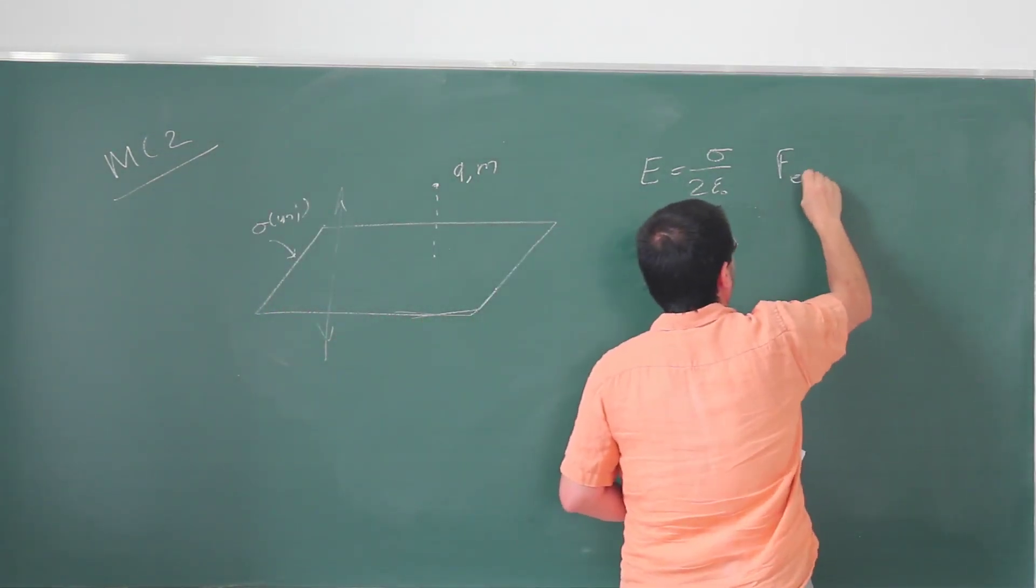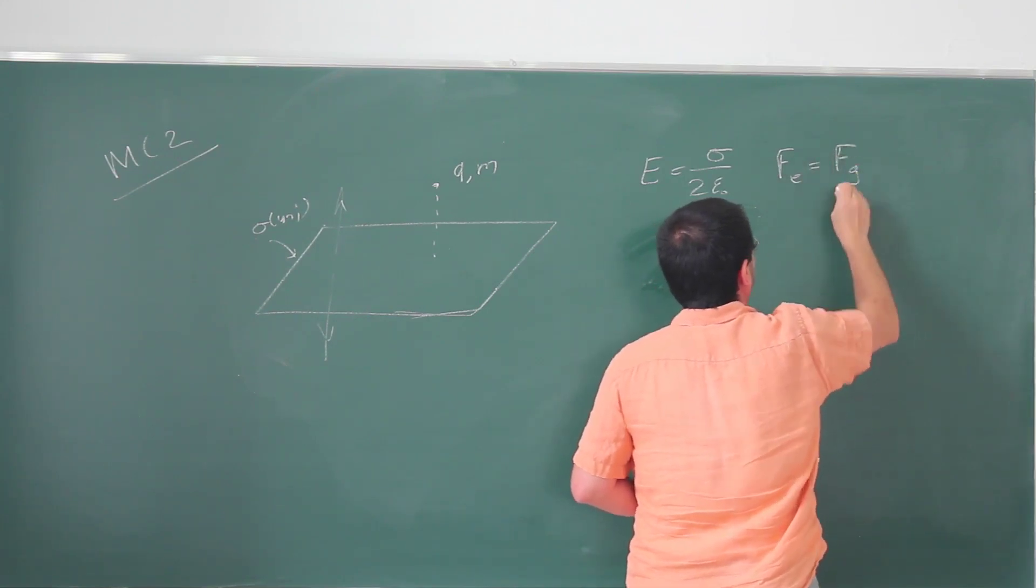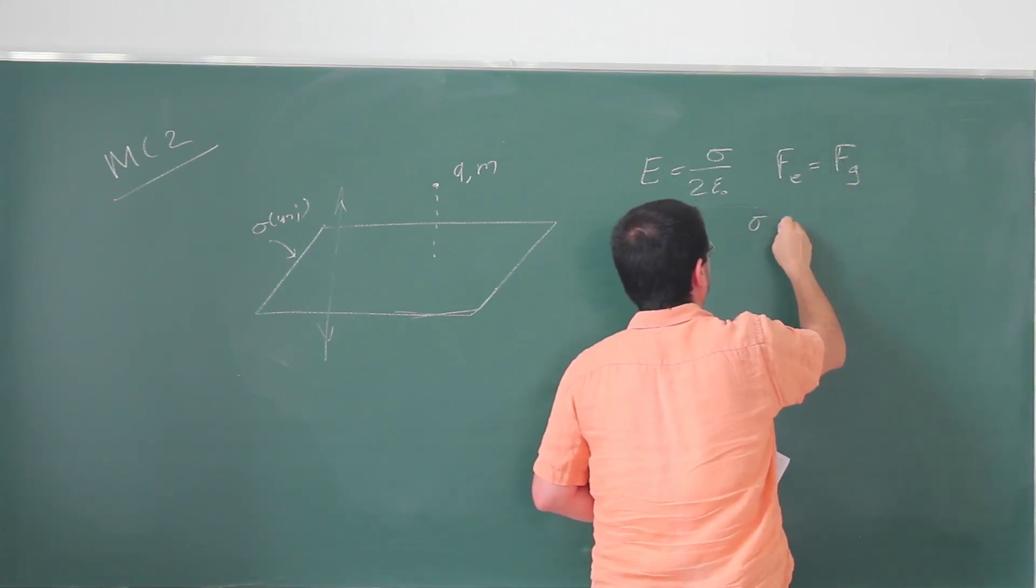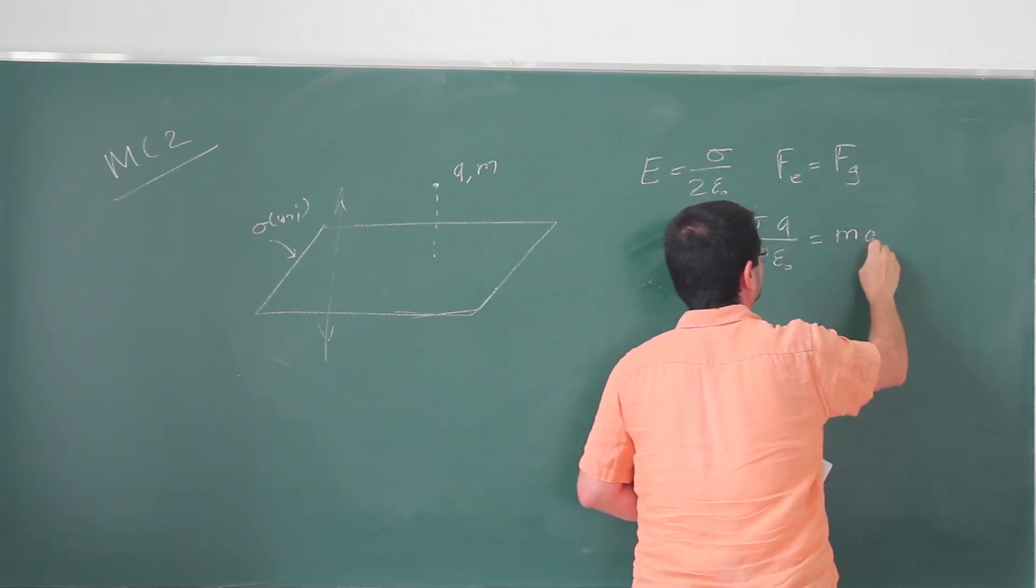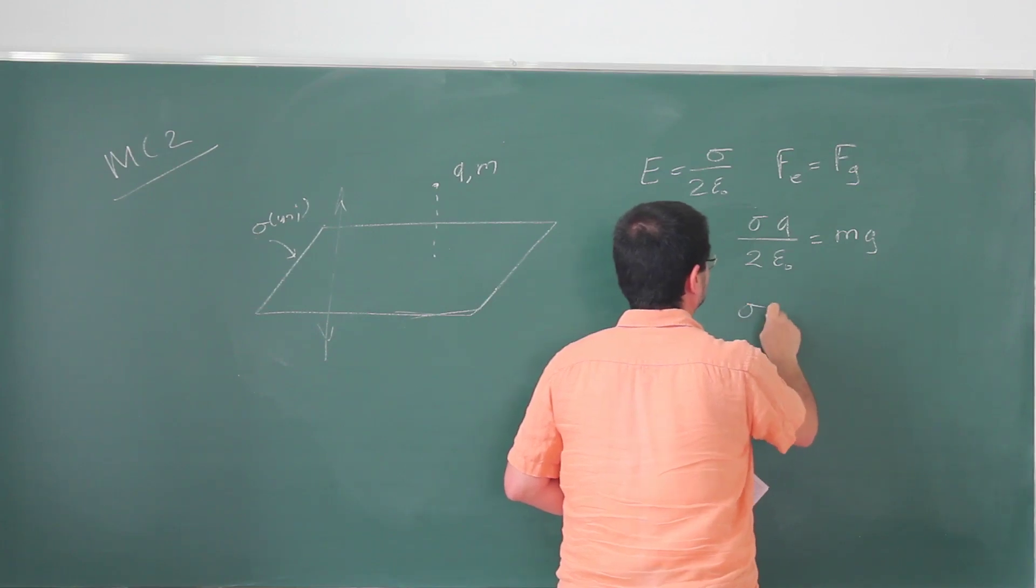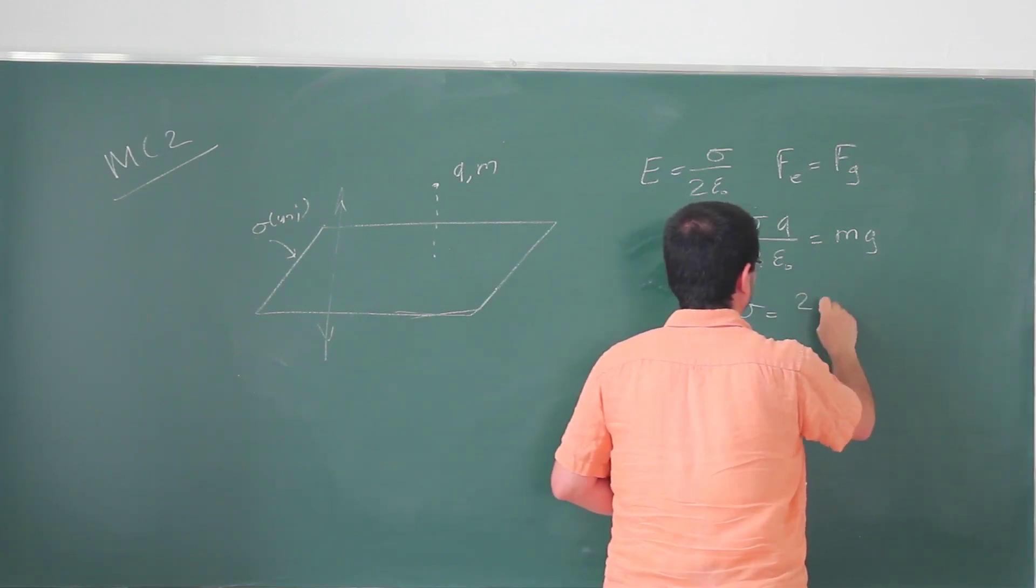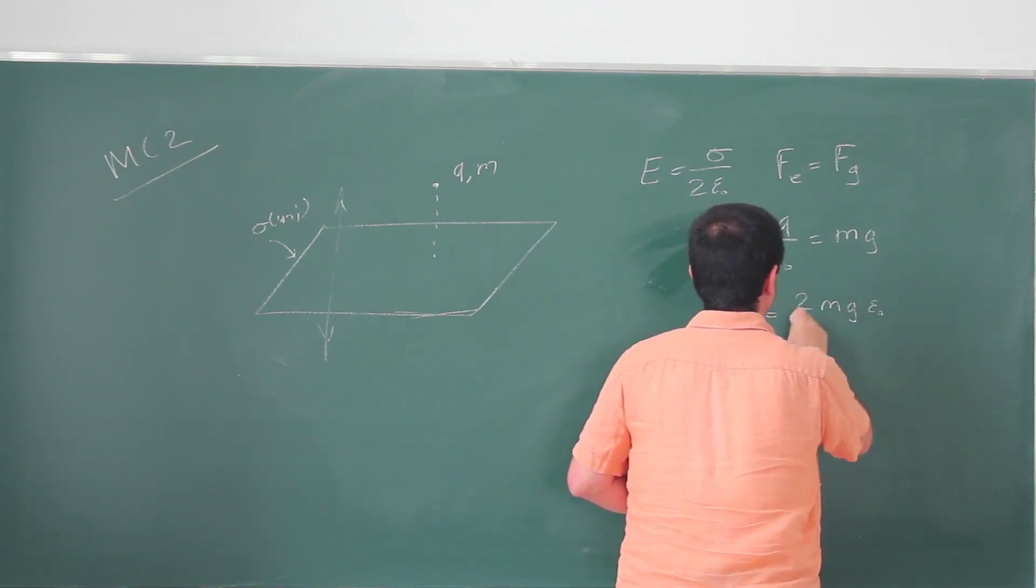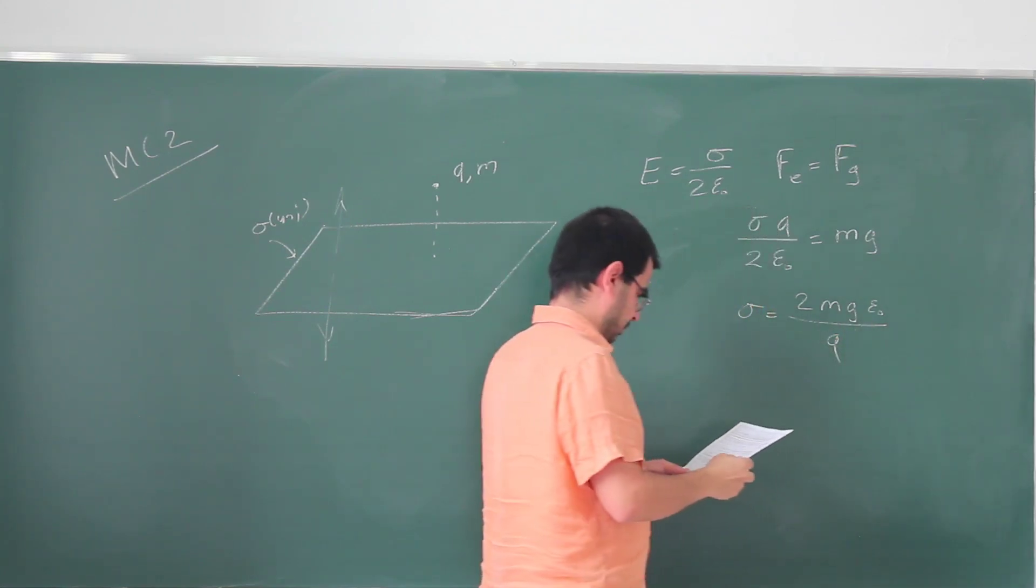The electric force has to equal the gravitational force. The electric force is sigma Q over 2 epsilon naught. The gravitational force is M times G, which means that the sigma required is 2MG epsilon naught over Q.